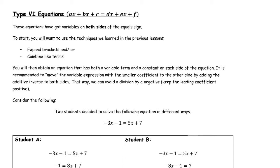In this lesson, we're going to take a look at what we're going to call type 6 equations. Type 4 and type 5 equations required a little bit of simplification on either side before solving, but in those cases the variable — the x variable — was really just on one side of the equation. Now we're looking at the situation where x is going to end up on both sides.